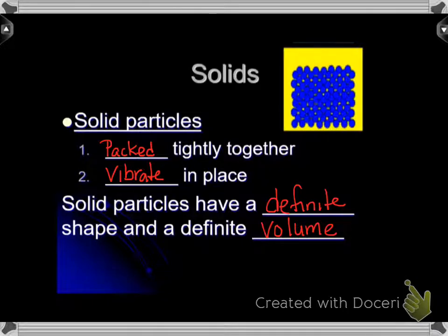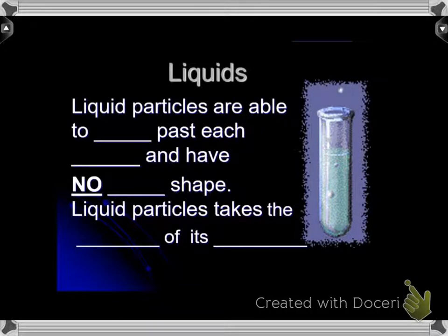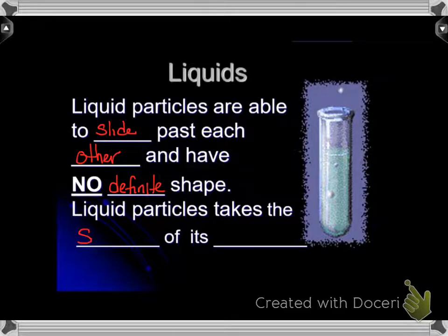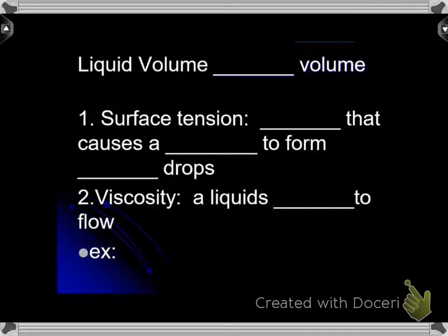Now moving on to liquids. Liquid particles are able to slide past each other and have no definite shape. What I mean by that is that they take the shape of the container. When we pour some water in that test tube, its shape is in the shape of the test tube. If we pour it in a beaker, the shape is going to be in the shape of the beaker. The liquid is going to take the shape of whatever is holding it because those particles slide back and forth past each other.